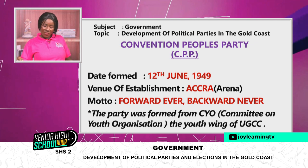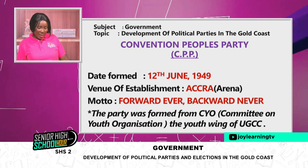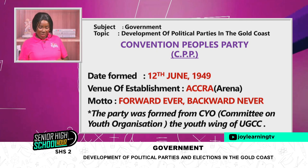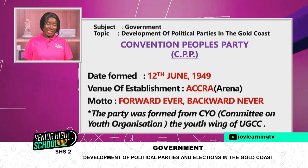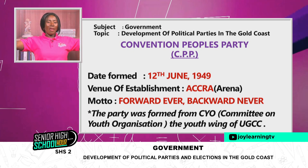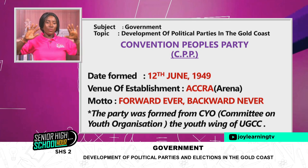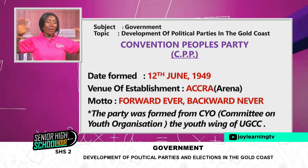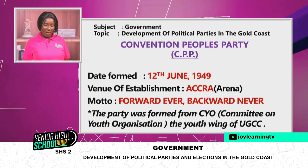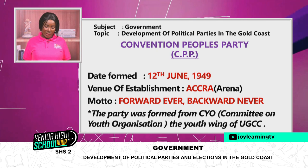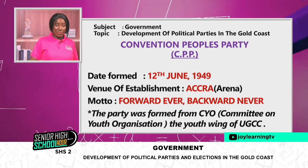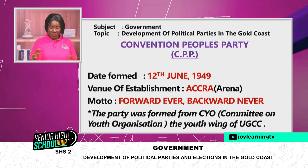So on the 12th of June 1949, he took the opportunity to break off. At Arena on the 12th of June 1949, he put the CYO together — a large group of youth from the Gold Coast — and established the Convention People's Party, now known as the CPP.